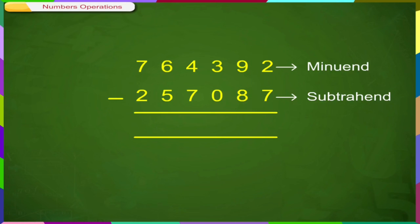bigger number first and then the smaller number and subtract place wise. Here, we cannot subtract 7 from 2. So, we can borrow from the next number and then subtract.